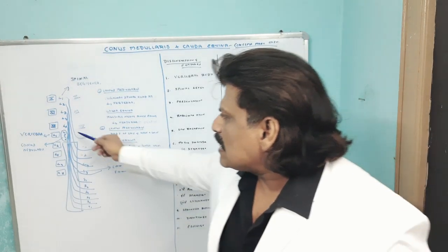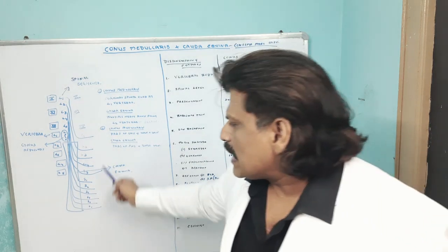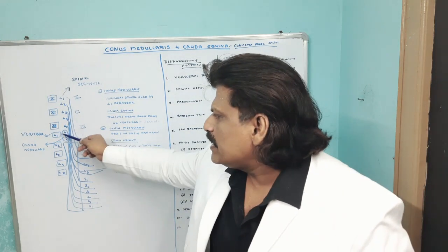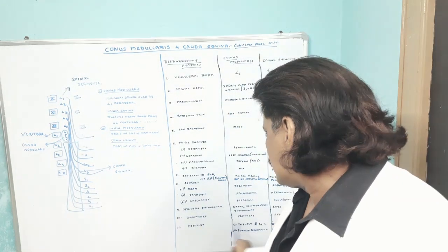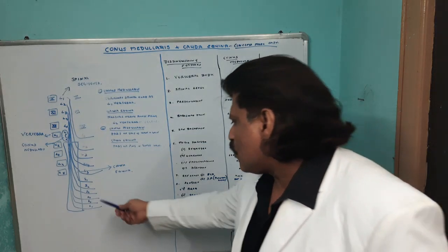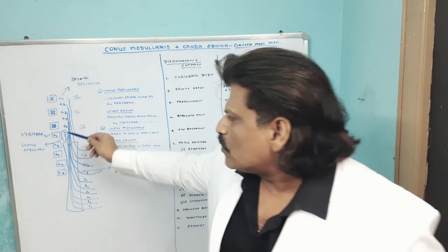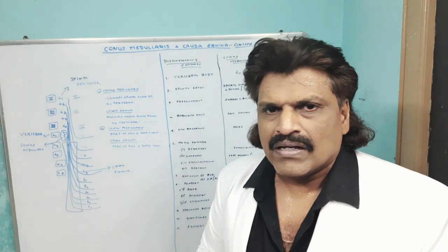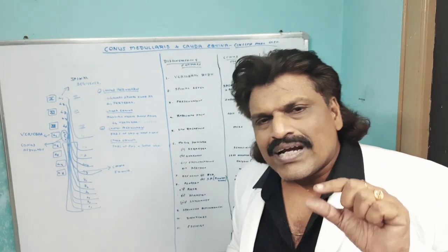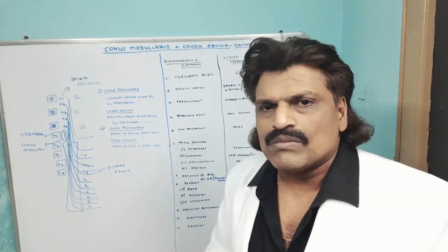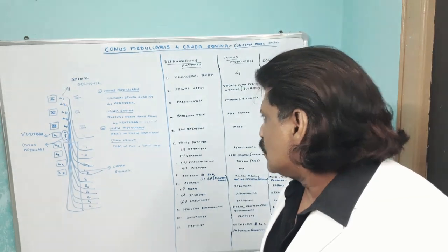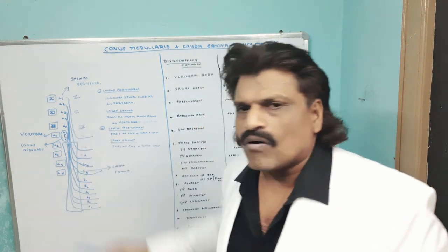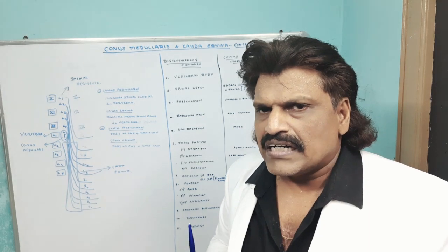Sphincter disturbances — bladder and fecal disturbances — are early in conus medullaris but are a late feature in cauda equina. Likewise, impotence is also early in conus medullaris lesion and is a late feature in cauda equina. The etiology of conus medullaris is usually trauma, sometimes tumors like ependymoma. The etiology in cauda equina is usually disc prolapse, but sometimes tumors like neurofibroma or schwannoma.